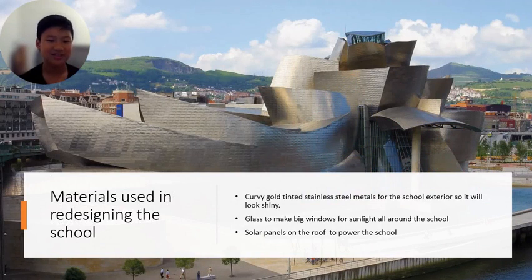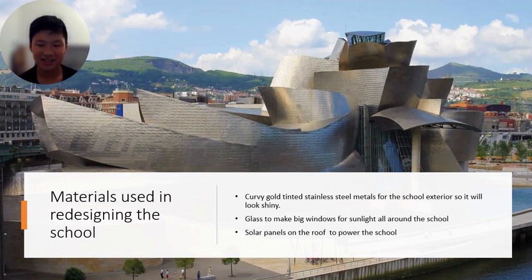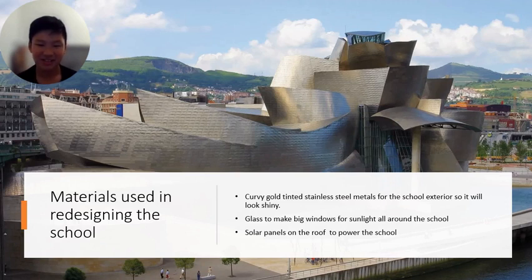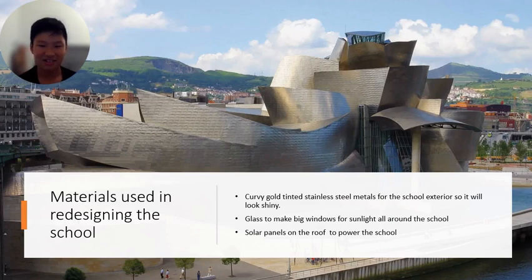Materials used for redesigning the school: curvy gold-tinted stainless steel metals for the school exterior so it looks shiny; glass to make big windows for sunlight all around the school; and solar panels to power the building.